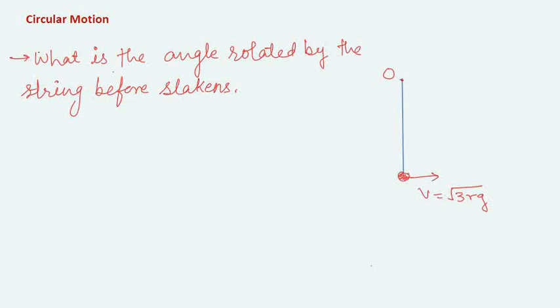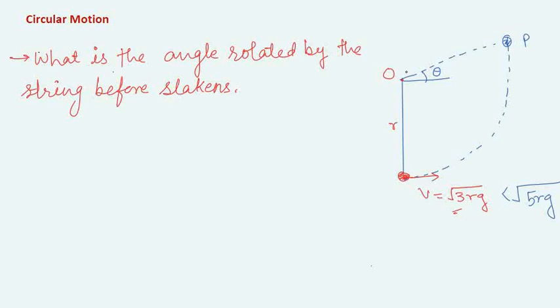Now let's work on one problem. Suppose there is a fixed point O with a pendulum of length r. The velocity at the lowest point is √(3rg). You have to find the angle rotated by the string before it slackens. Since this velocity is less than √(5rg), the particle will not complete the circle. It will go to some point P, and the angle that OP makes with the horizontal is theta. The total angle rotated will be π/2 plus theta, so we need to find theta.